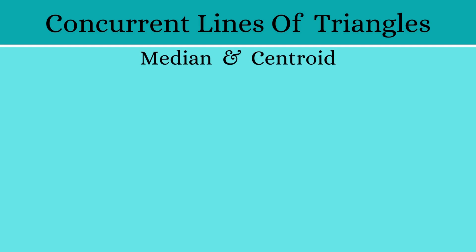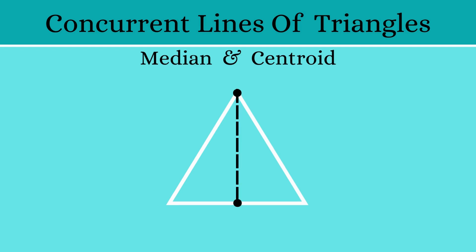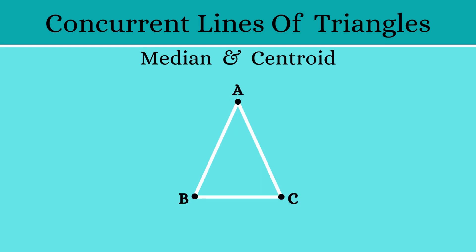First is the Median. A median is a line which connects one of the vertices of the triangle to the midpoint of the opposite side. Let's take a triangle ABC and mark the midpoint of BC. Let this point be X. Now when you join X to the opposite vertex A, what we get is the median AX.